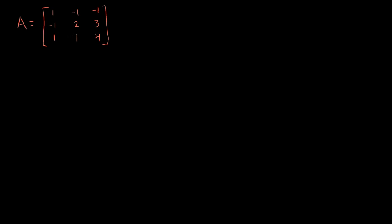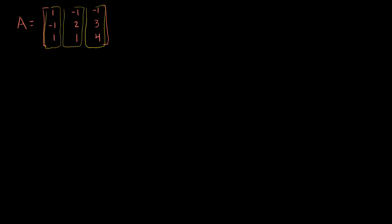I have this matrix A here that I want to put into reduced row echelon form. We've done this multiple times — you just perform a bunch of row operations. But what I want to show you in this video is that those row operations are equivalent to linear transformations on the column vectors of A. Let me show you by example.